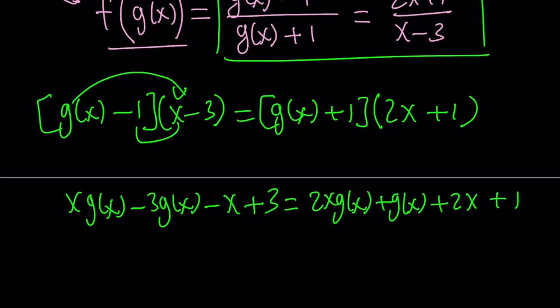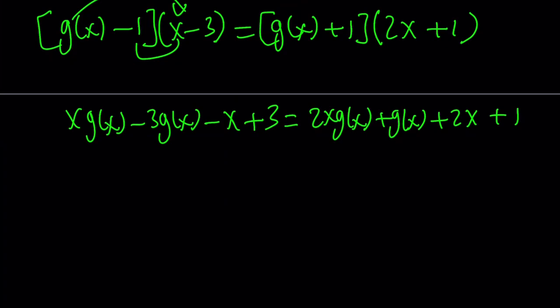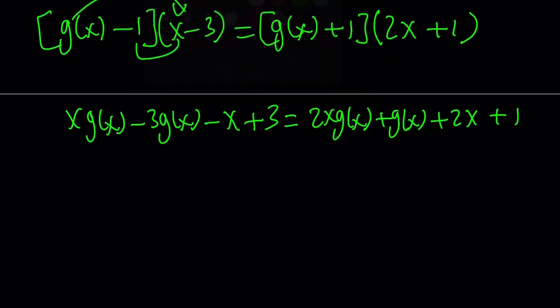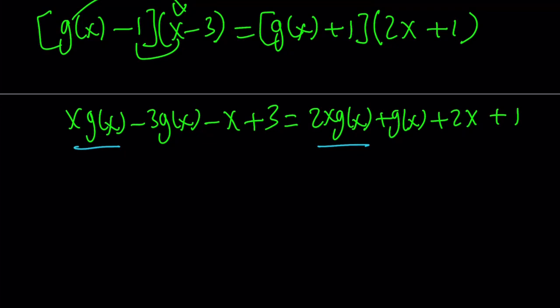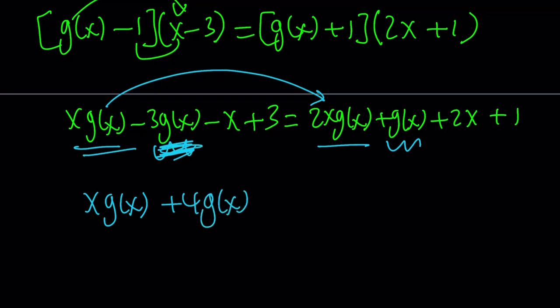So this is what we get from here. They're like terms. What should we do? Let's go ahead and put everything that contains g(x) on the right-hand side, and everything else on the left-hand side. I'm going to subtract this. That's going to give me x g(x). I'm going to bring this 3 g(x) over here as a plus sign, so that's going to be plus 4 g(x).